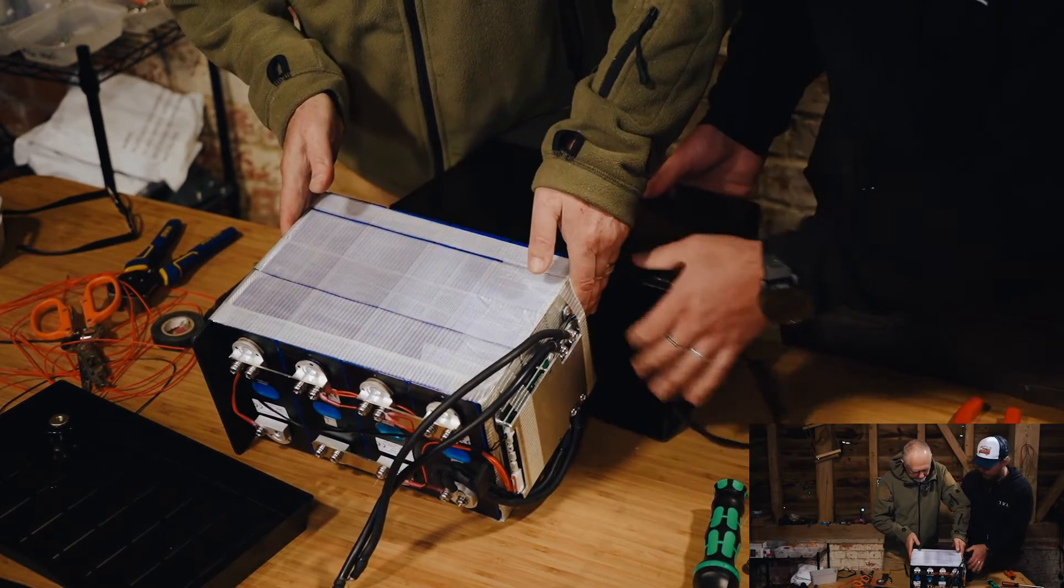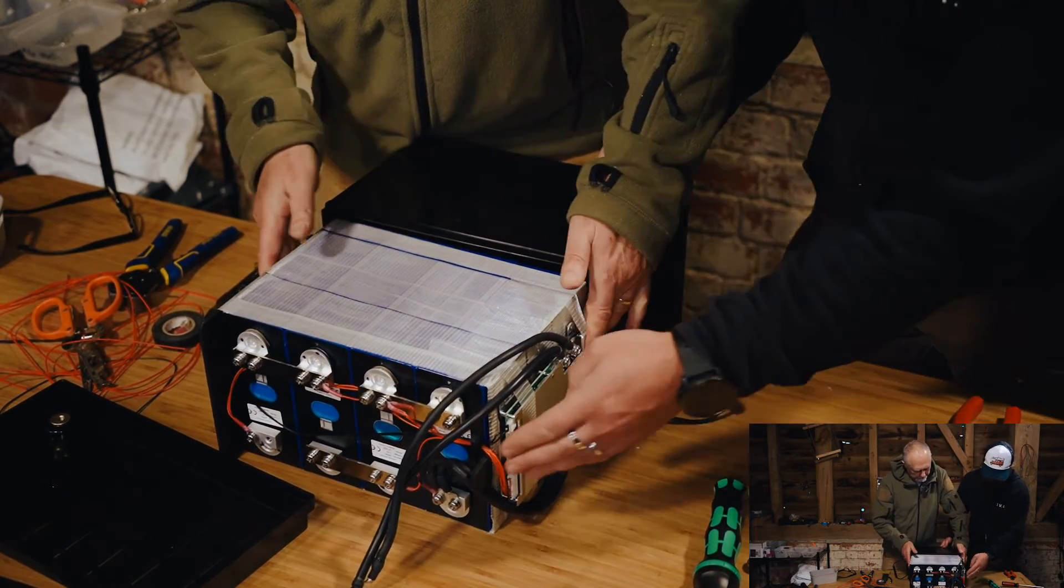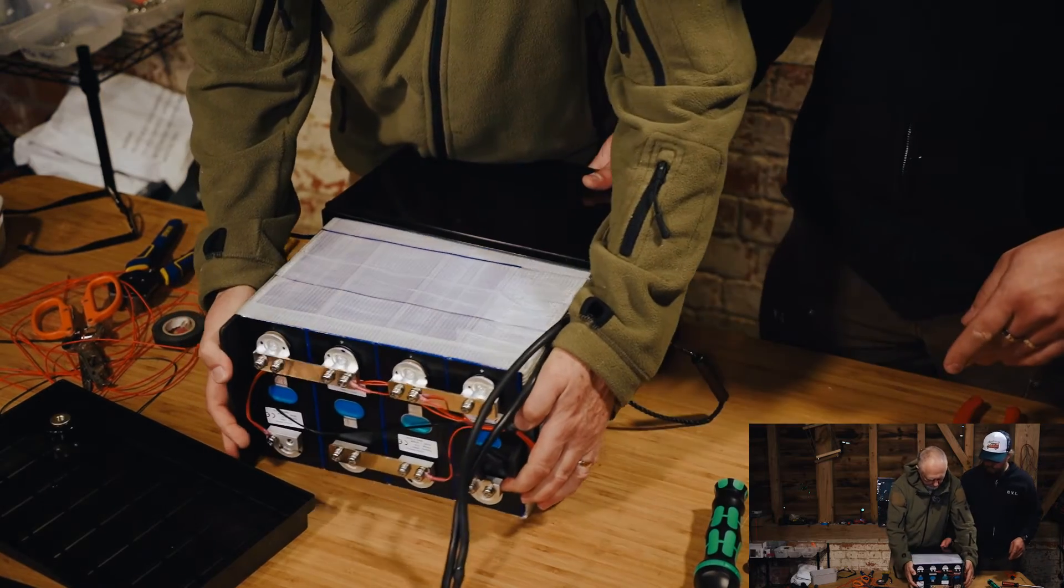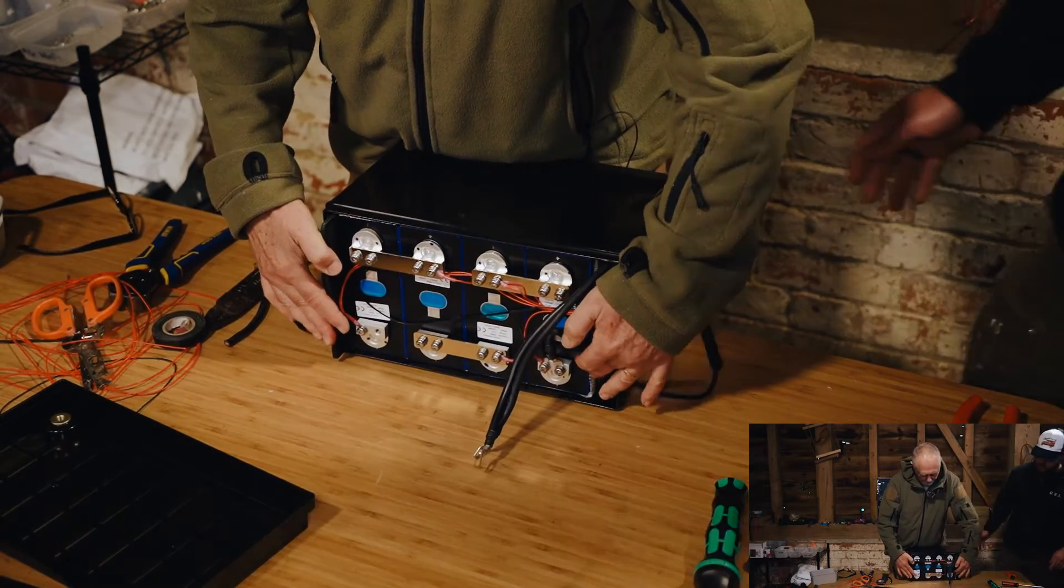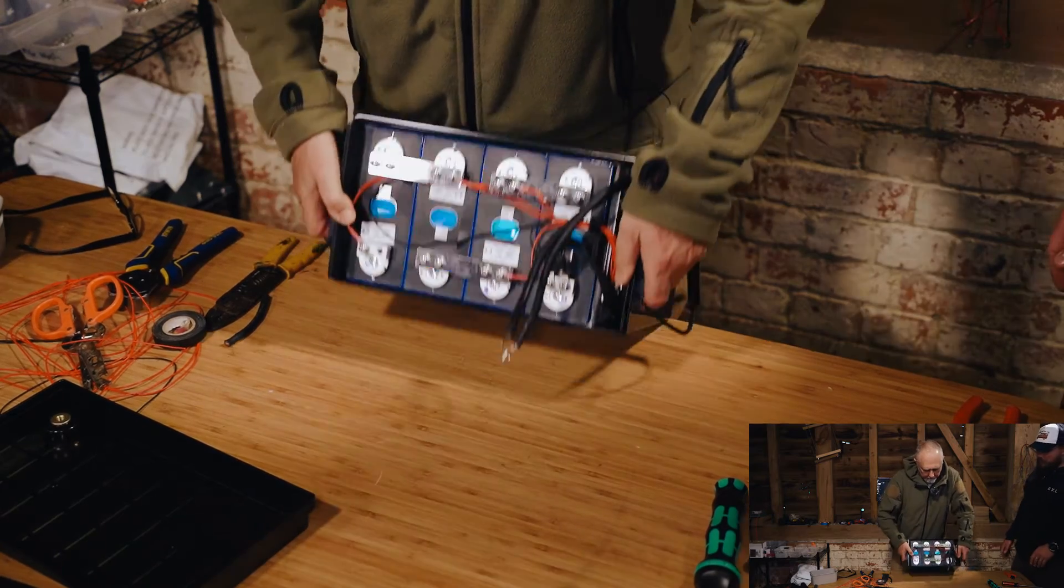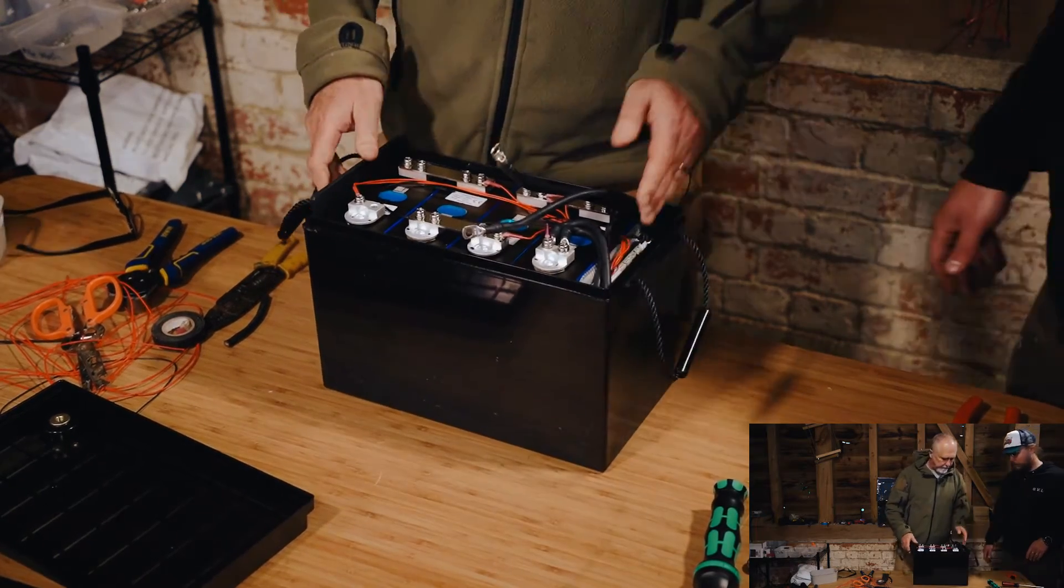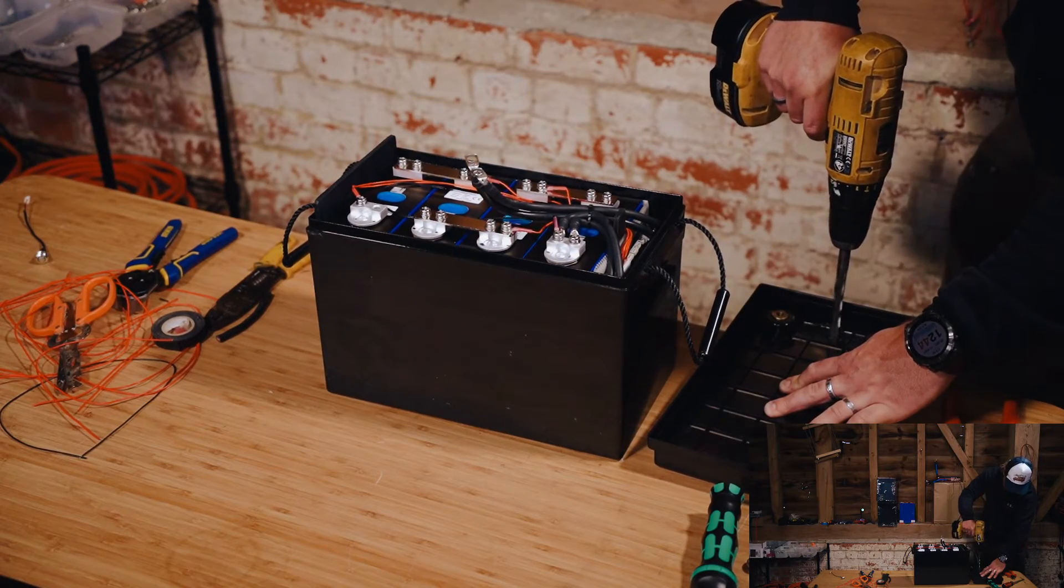This is the easiest method of getting these batteries into the case that we've found. So I lay them on their side and slide them up like that. We've tried various methods of dropping them in and it is possible, but this is the riskless way.